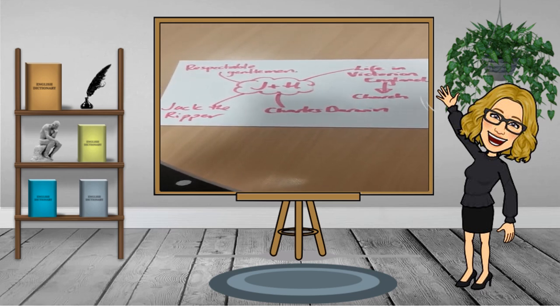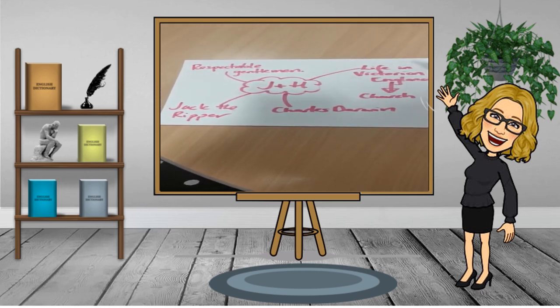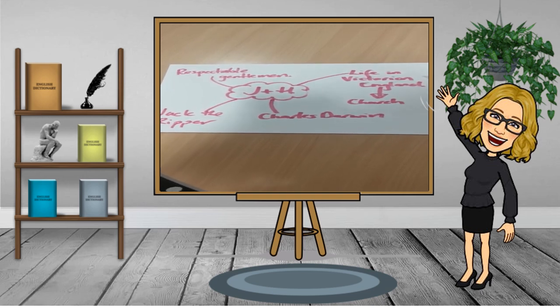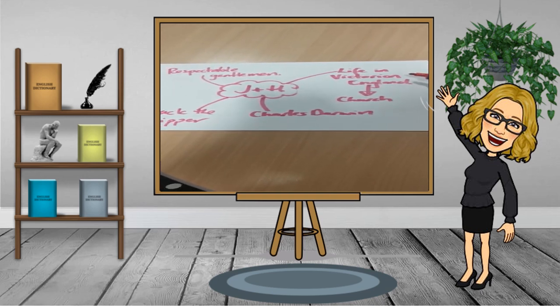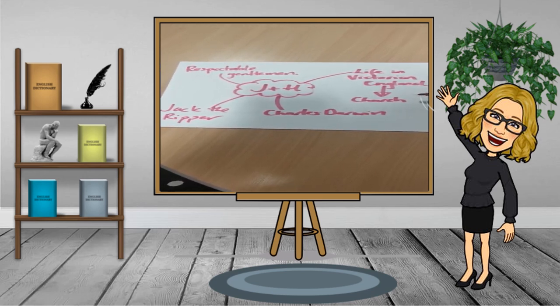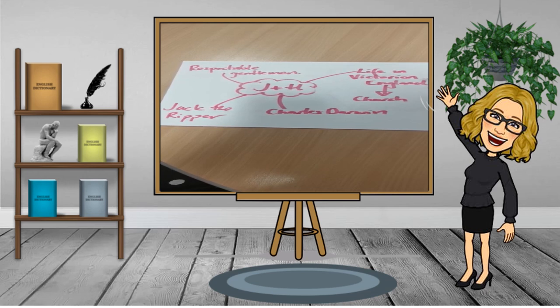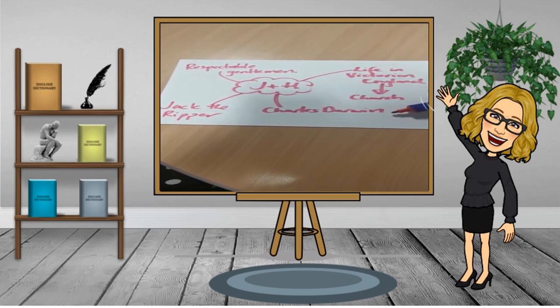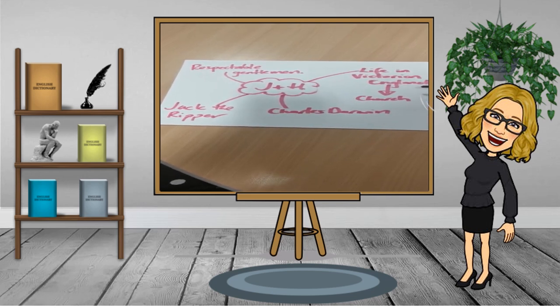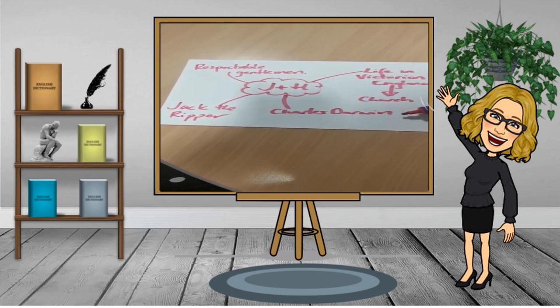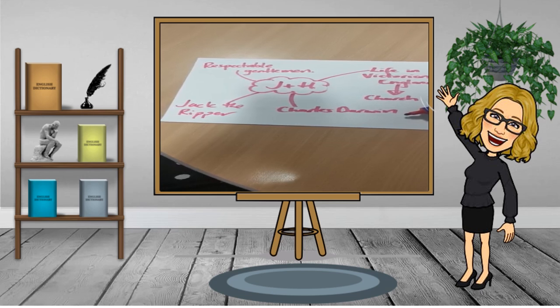For Jekyll and Hyde, you will need to understand life in Victorian England in terms of religion. The majority of society would have regularly attended church with very few other beliefs. This contrasted with Charles Darwin's theory, who didn't believe we came from Adam and Eve. He believed in the theory of evolution - that humanity evolved and that's where we all came from.